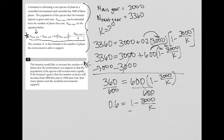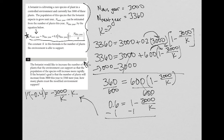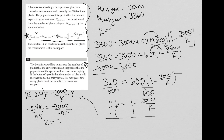Now I subtract 1 from both sides: 0.6 minus 1 is negative 0.4, which equals negative 3,000 over K. Multiplying both sides by K gives negative 0.4K equals negative 3,000. Dividing both sides by negative 0.4, using the calculator: negative 3,000 divided by negative 0.4 equals 7,500. So K equals 7,500, and that is the final answer.